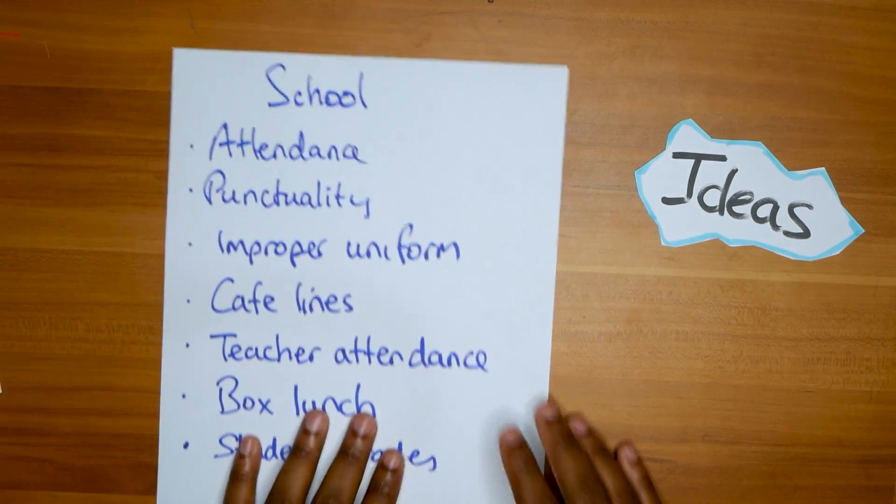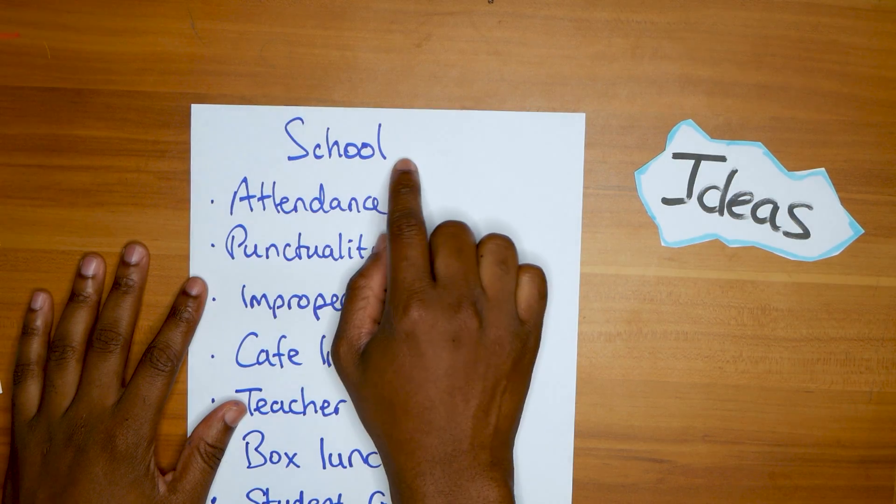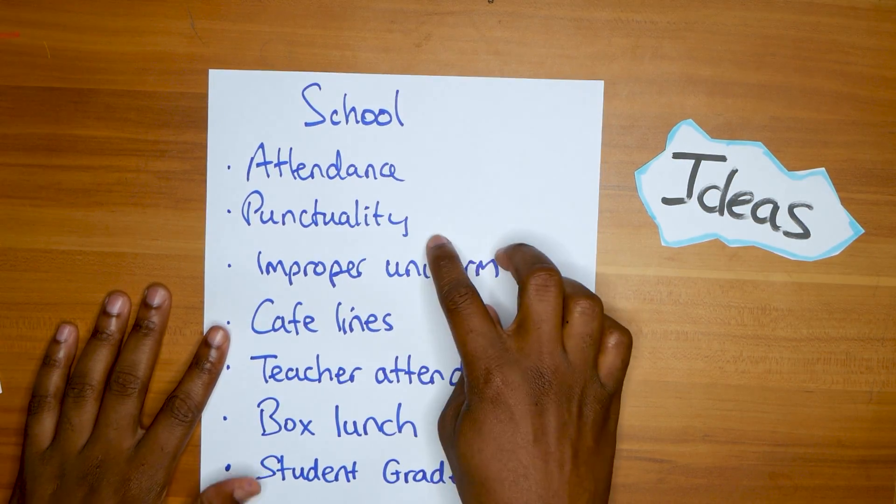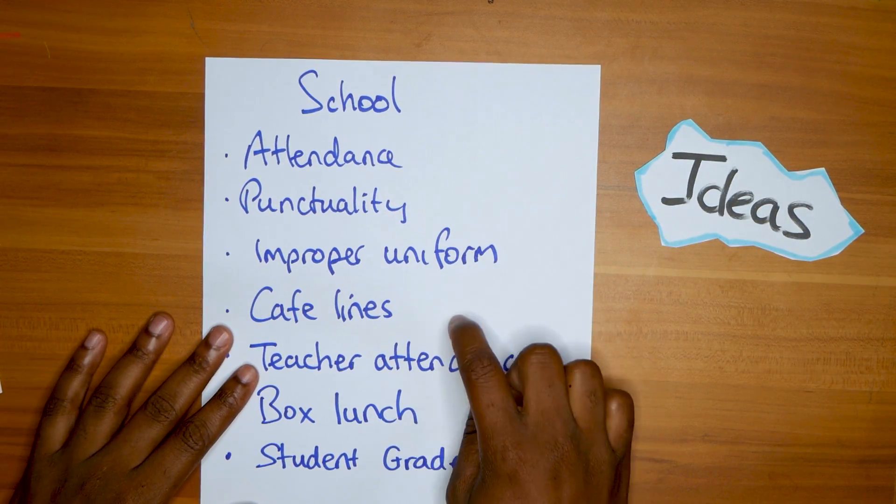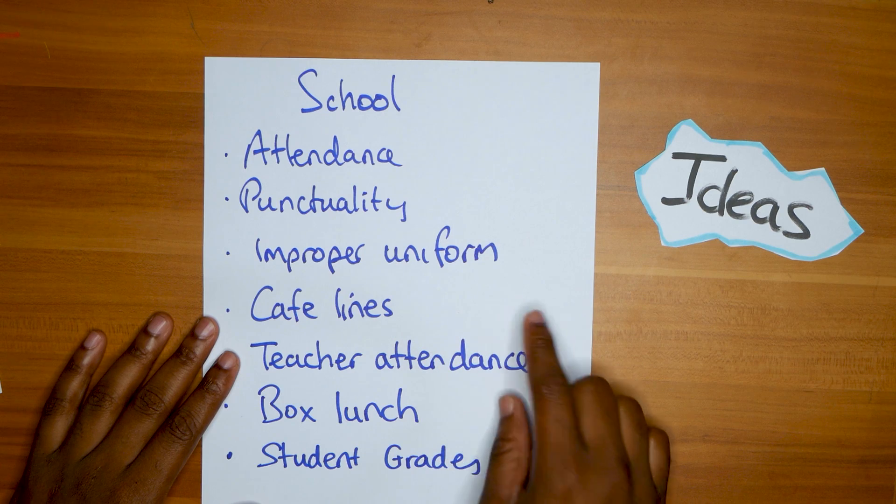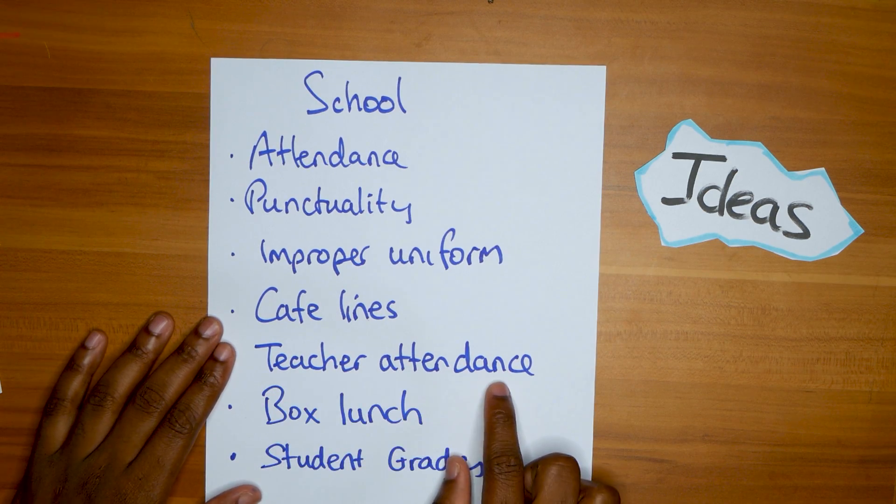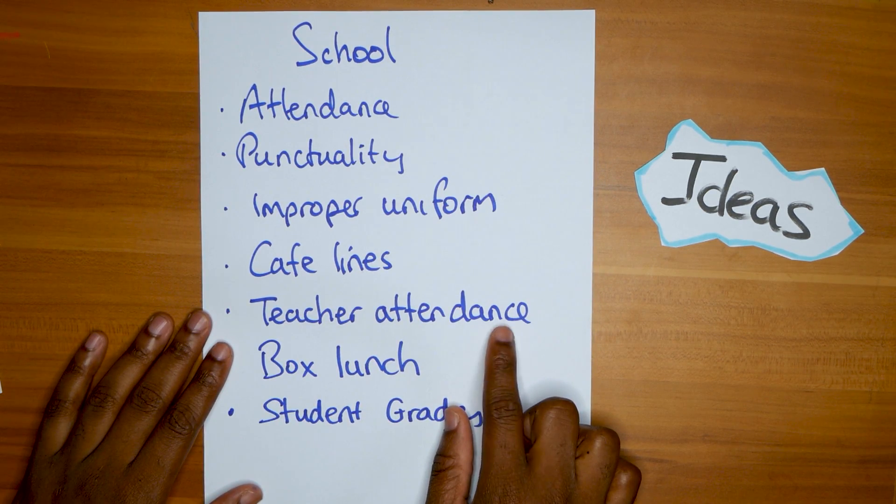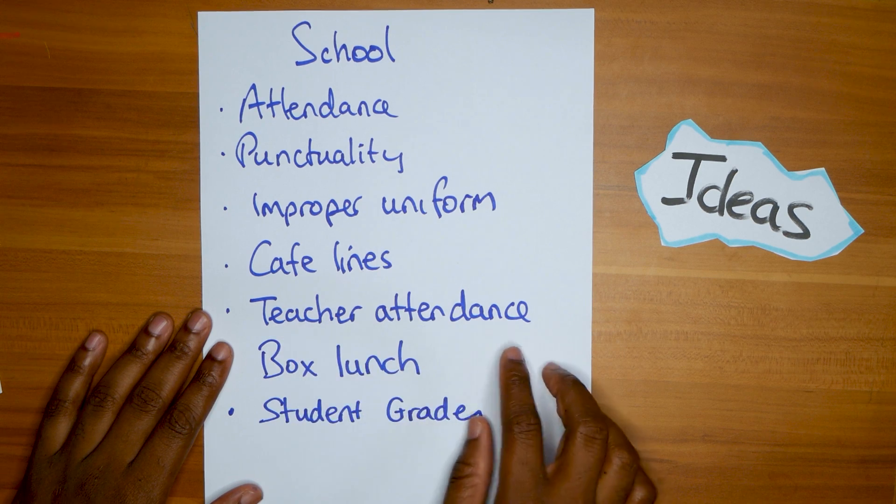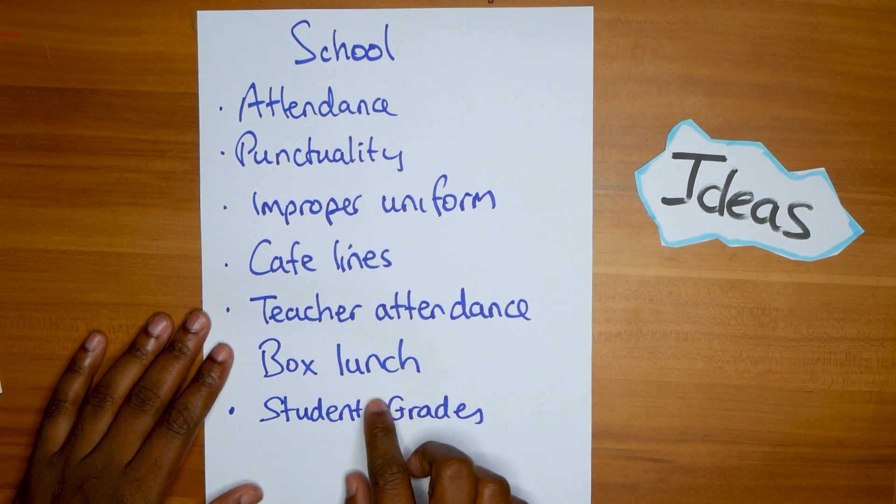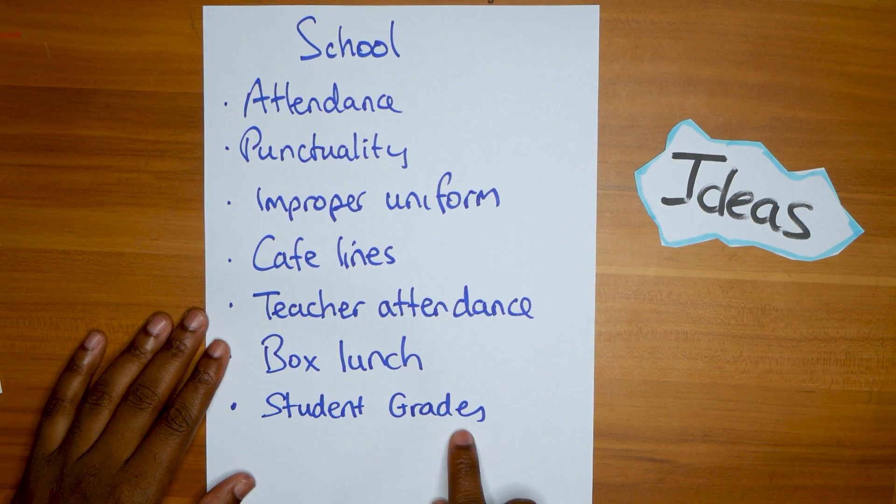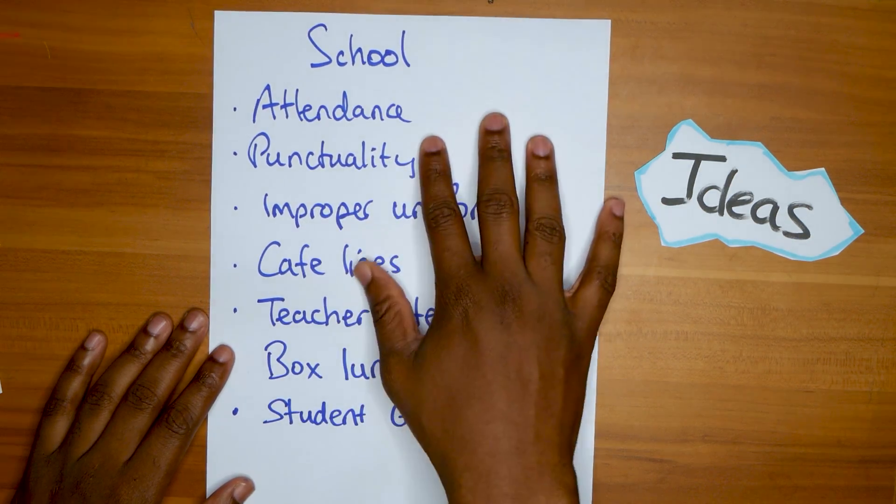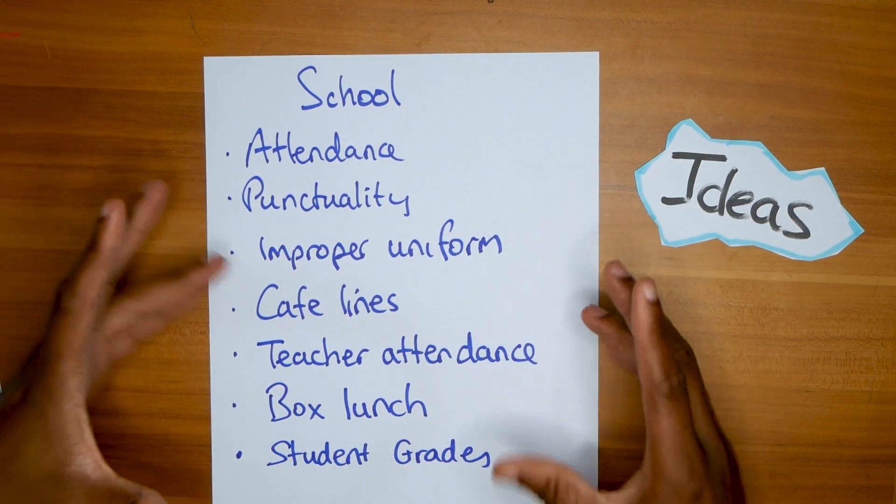Another popular option in home SBAs is something involving building, like tiling a room or doing roofing, and working out the exact amount of galvanize or tiles needed for a specific area. If we come over to school, school is the most popular. You can go with attendance, punctuality, improper uniform, cafe lines. With the times, you can even try teacher attendance if you're feeling brave. Probably not, unless your math teacher comes all the time.